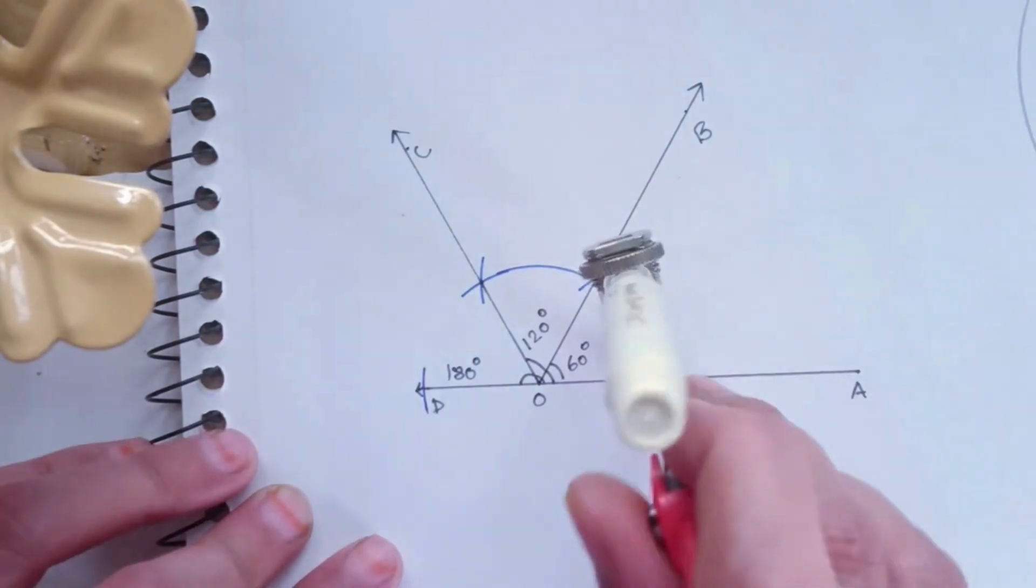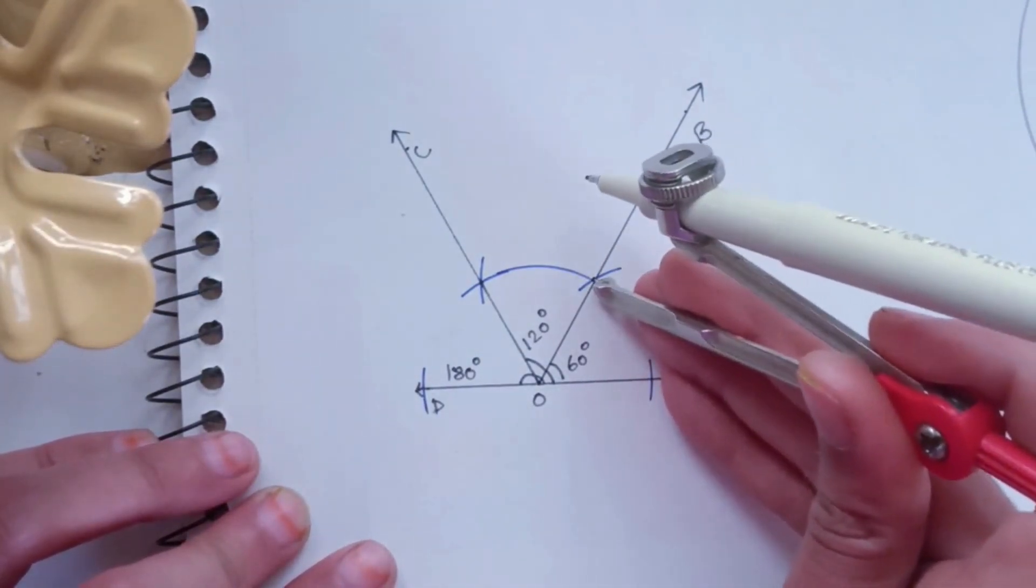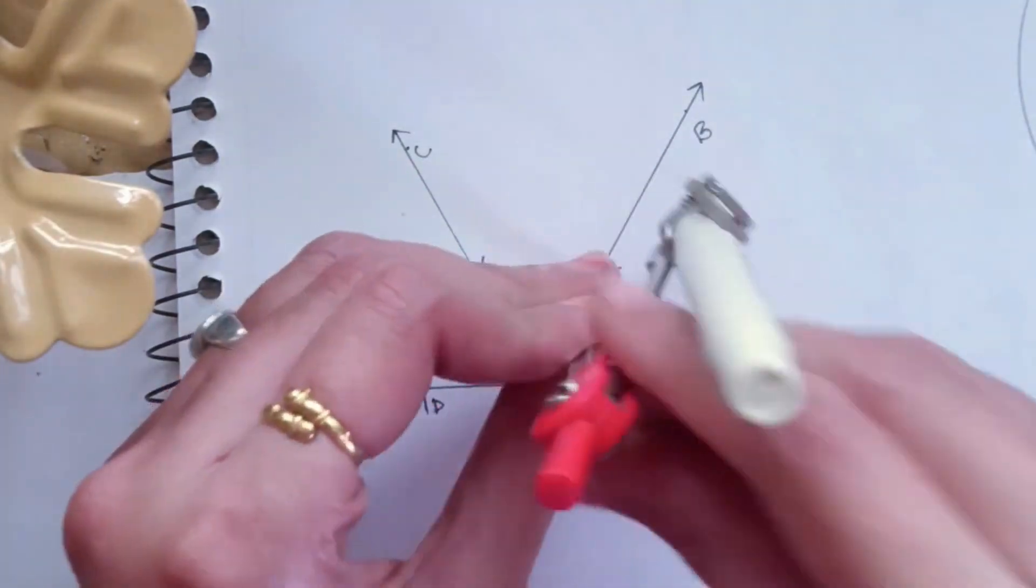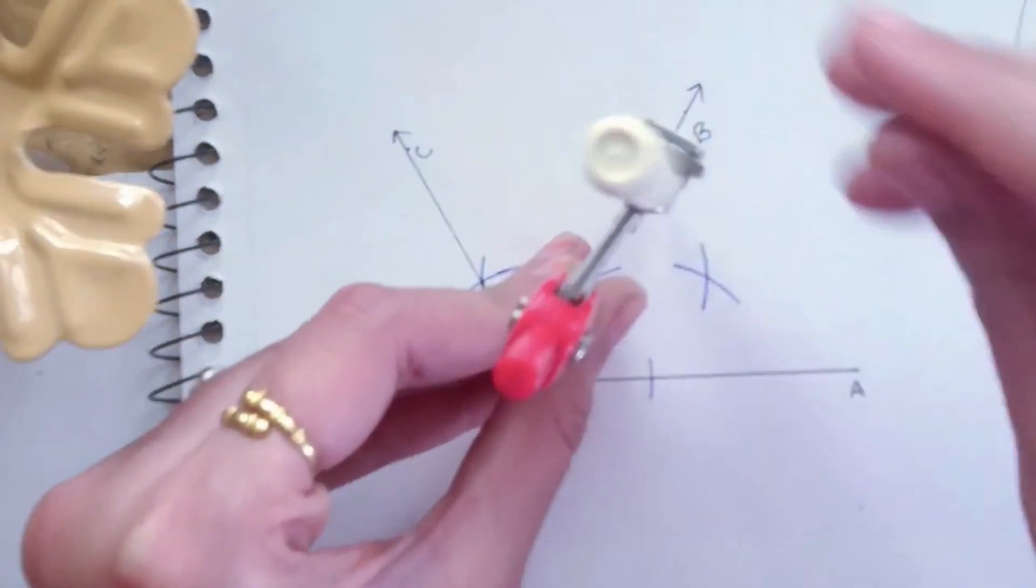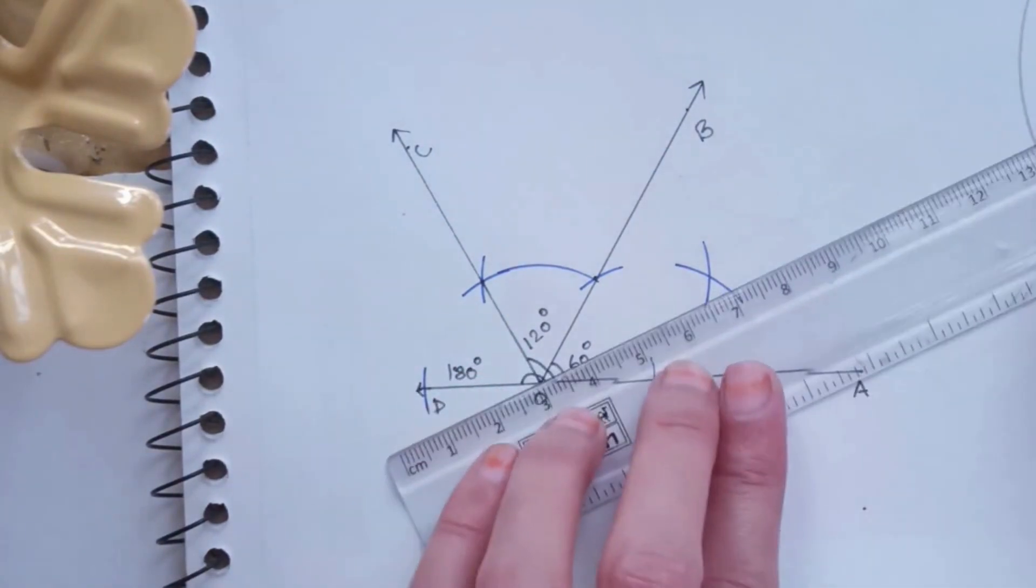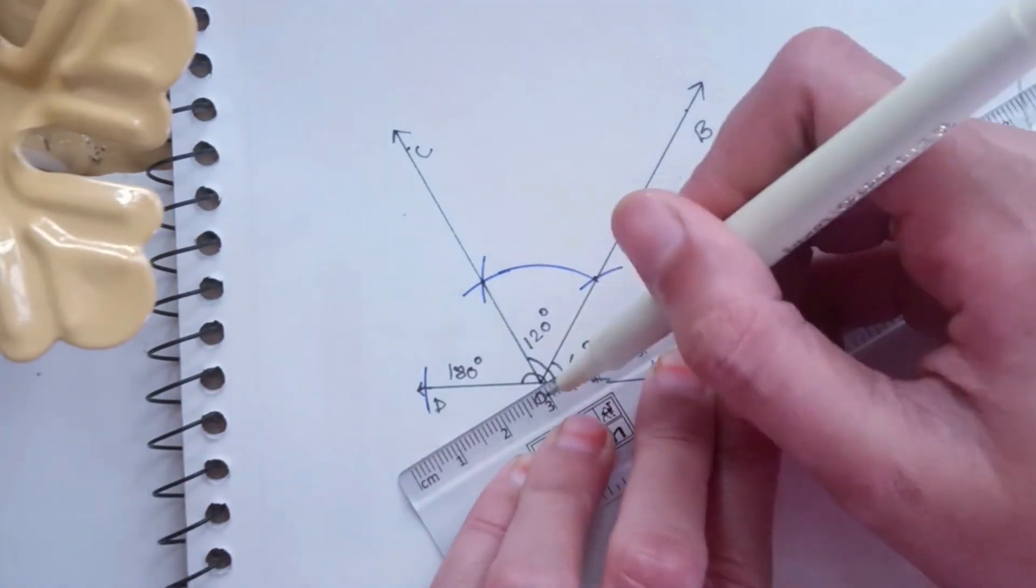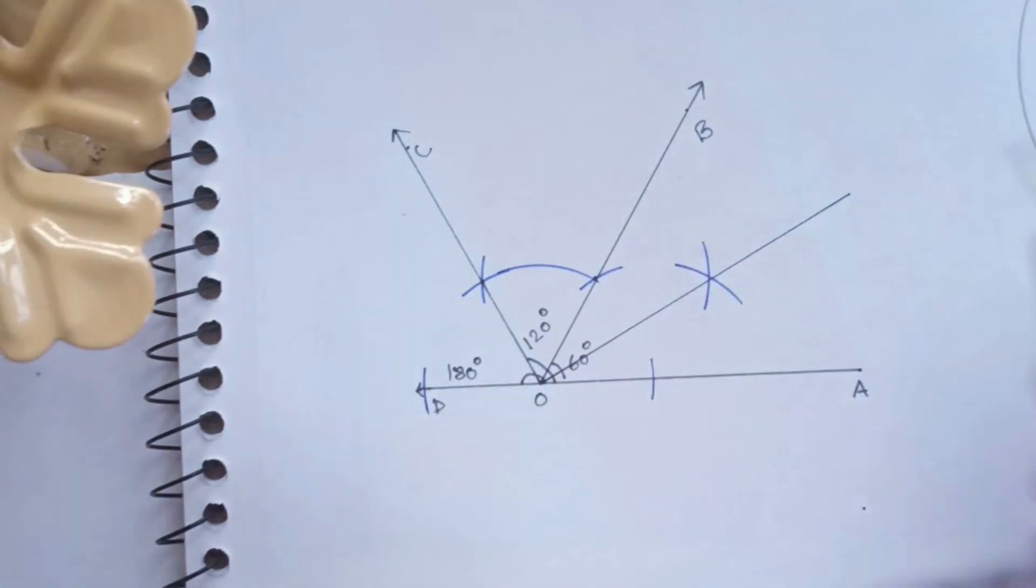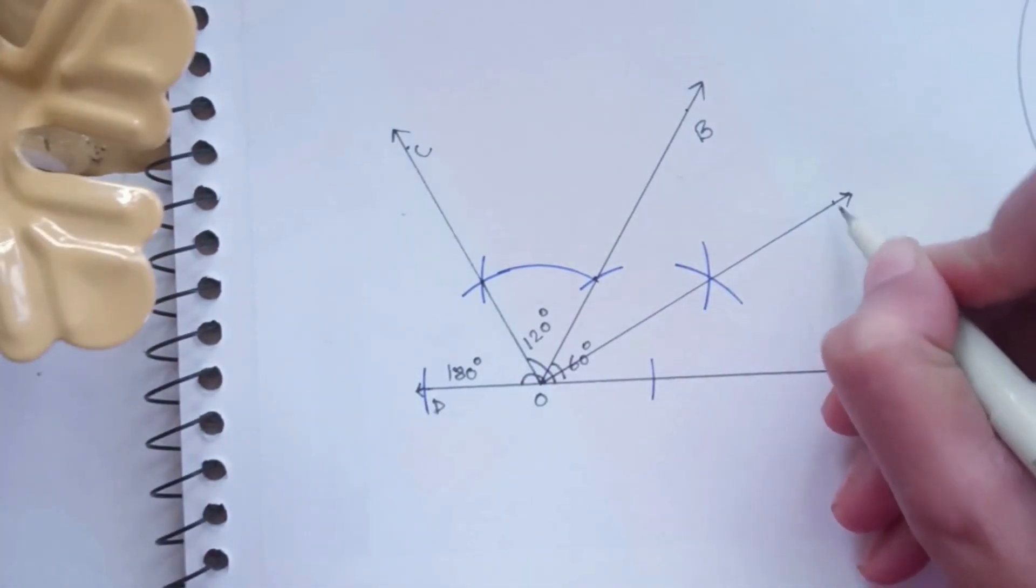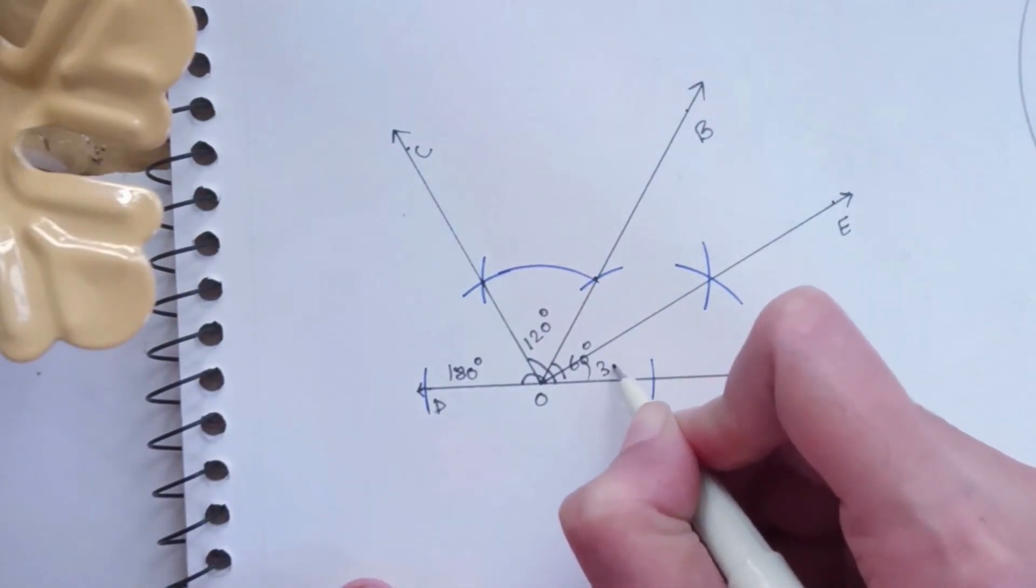So for that, with the same distance in the compass, just draw intersecting arcs from the first two arcs of 0 degrees and 60 degrees, as that of line OA and OB. This intersecting point connecting with O will be a 30 degree angle, and we will name the line as OE.